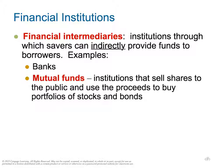Financial intermediaries are where savers can indirectly provide funds to borrowers. For the context of our book, there are two types: direct and indirect. Financial markets are a direct way to provide funds to borrowers, while financial intermediaries — such as banks and mutual funds — are an indirect way for savers to provide funds to borrowers.